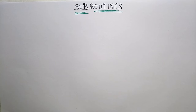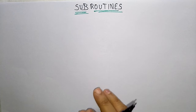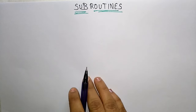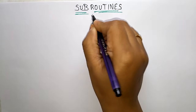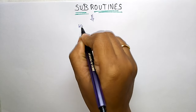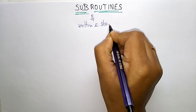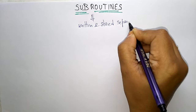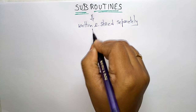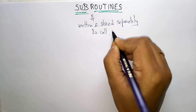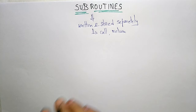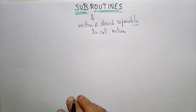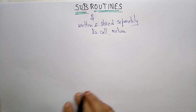Hi students, coming to our next topic, that is subroutines. A subroutine is nothing but a small program that can be called whenever required. So instead of repeating the same program segment at all locations, these can be written and stored separately. Whenever we require, we just call that subroutine. After that, we return and continue with the main program. Each such block of instructions which carries out a specific and well-defined task is called a subroutine.